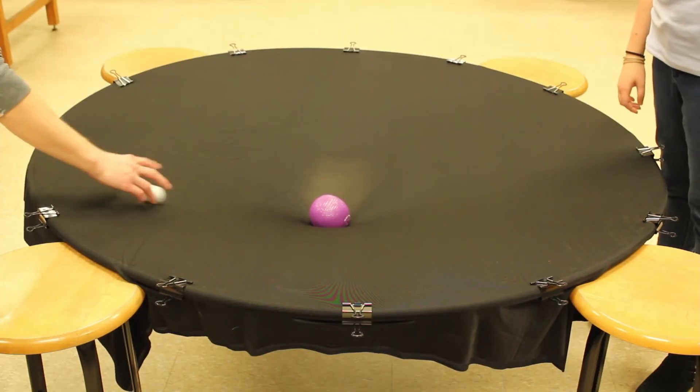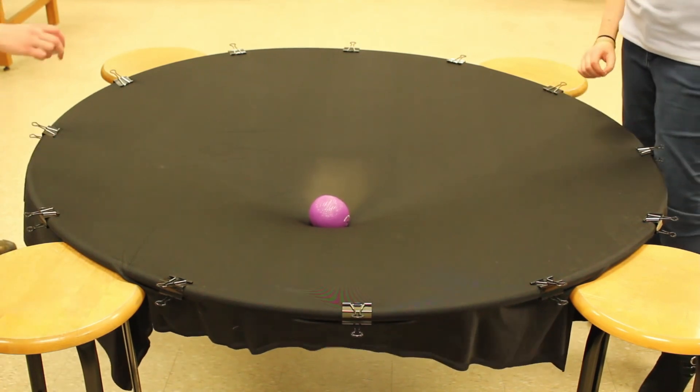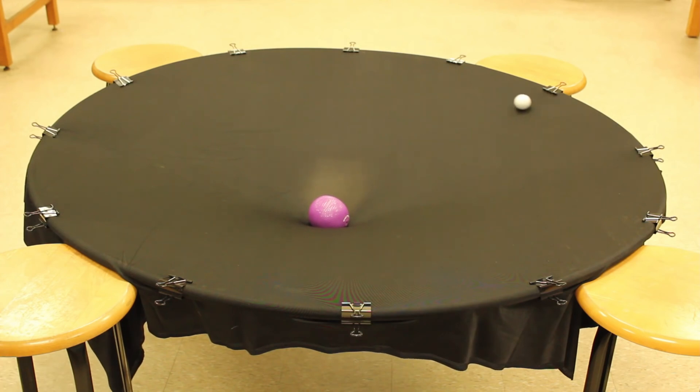So, how does this curvature work? Well, imagine placing a large object on a trampoline. The trampoline represents spacetime, and the object represents a massive object like a planet. The weight of the object will cause the trampoline to curve, creating a well in the fabric of spacetime.